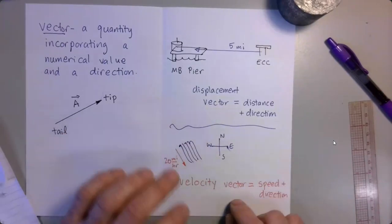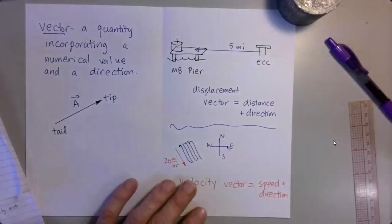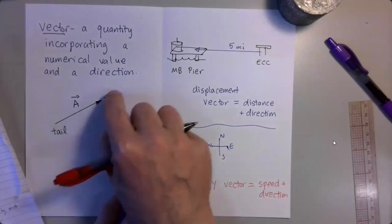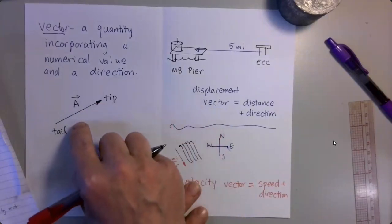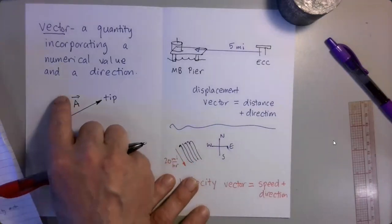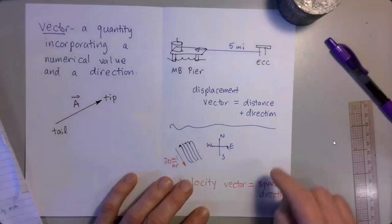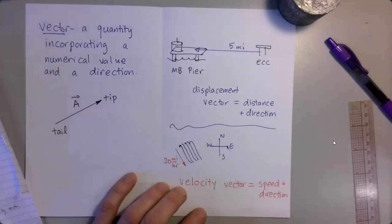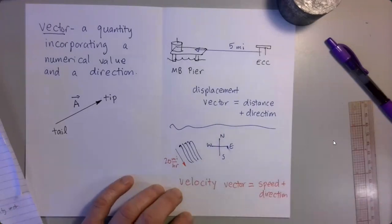Okay, so now we have learned what a vector is. We've learned how to represent it graphically with an arrow. We've learned how to represent it symbolically with a letter of the alphabet and an arrow on top. We've seen a couple examples of vector quantities. And in the next video, we're going to be looking at some of the basic mathematical operations we can perform on vectors.